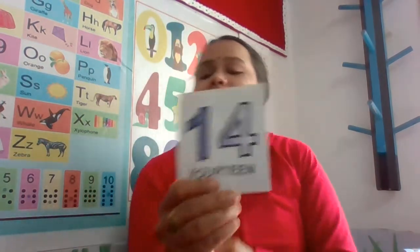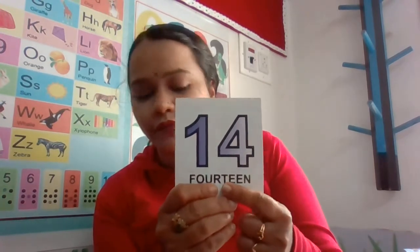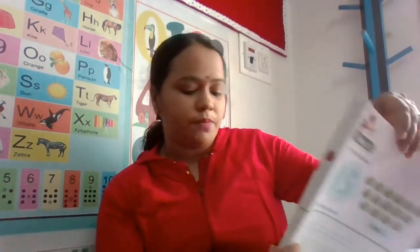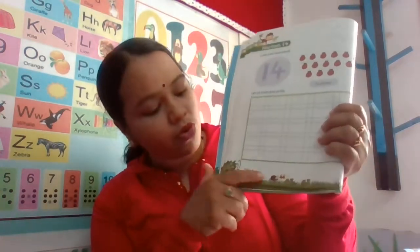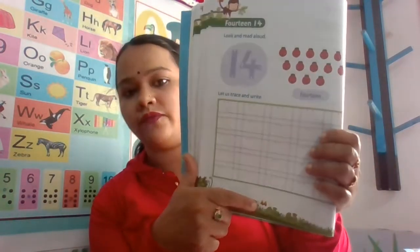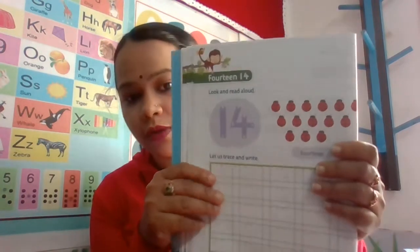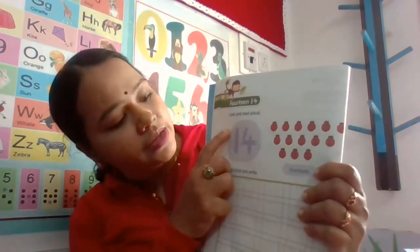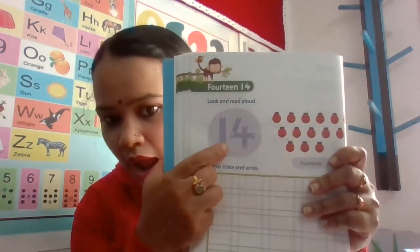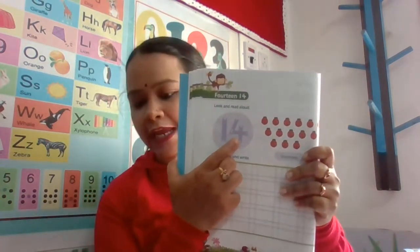The number we learnt is 14. 1, 4, 14. Now please open your numeracy skill book page number 44. In numeracy skill book page number 44 there is number 14. 1, 4 becomes 14.